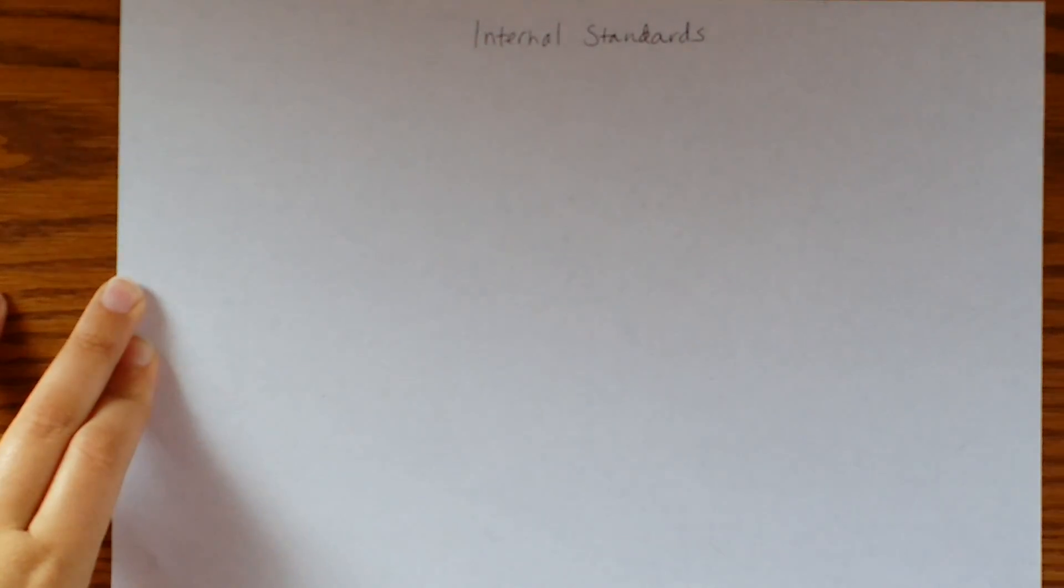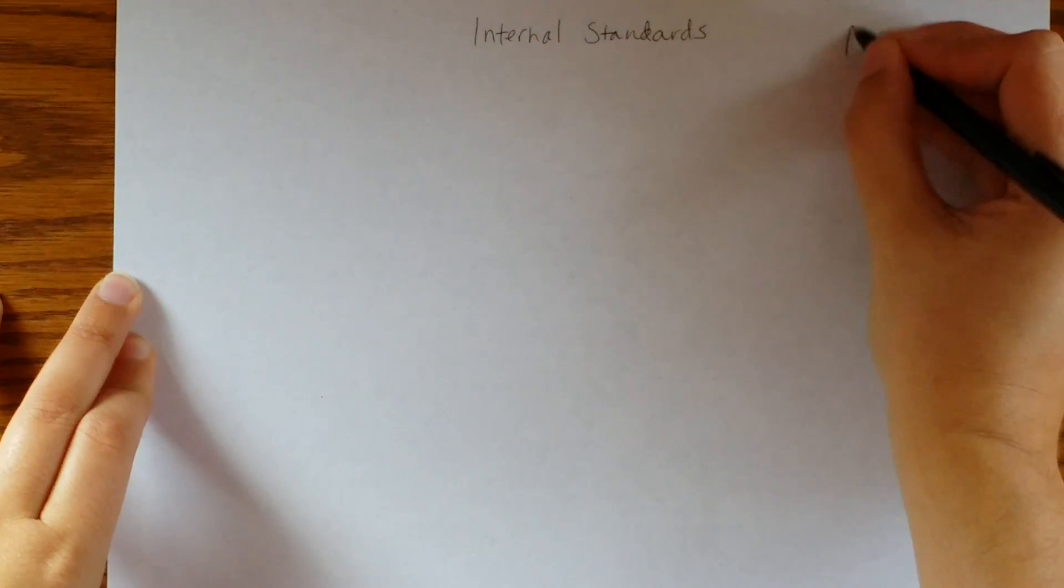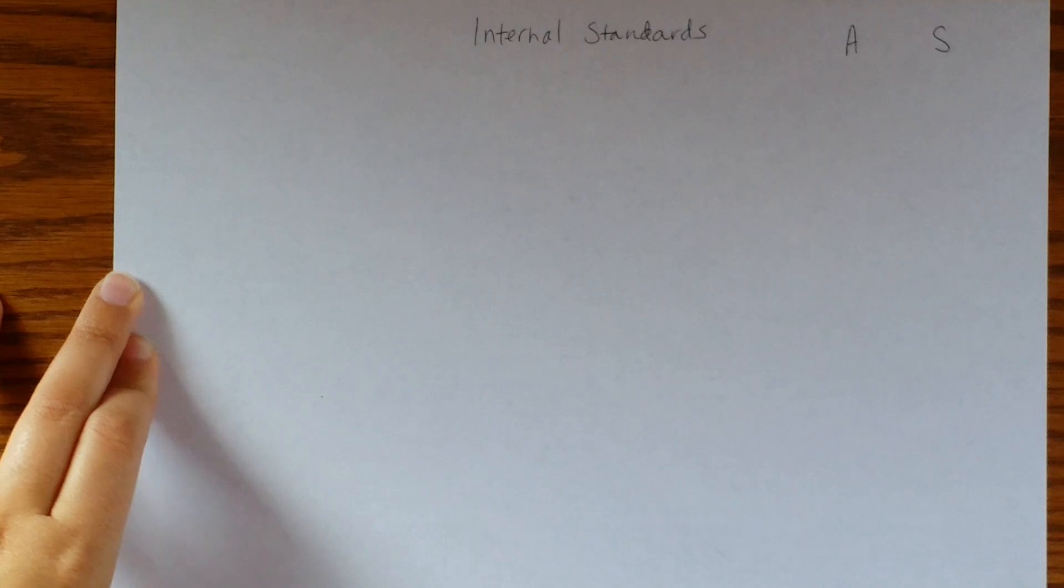What you need to have is you have some sort of analyte which we'll call A and a standard that you call S, and we want to set up a proportion between these two.